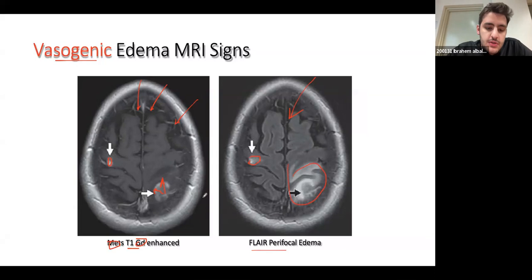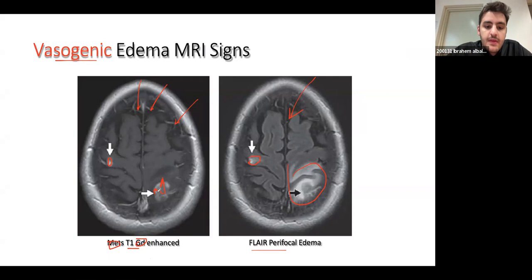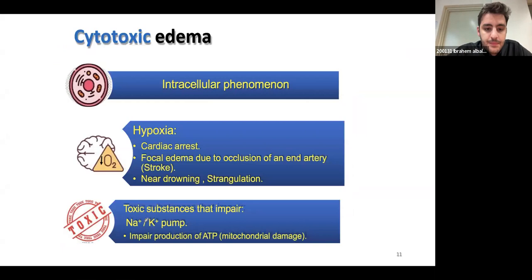One thing to notice: the leakage pattern appears on two sides of the brain. I'll explain this better when we talk about cytotoxic edema. For now, know that when Gd leaks out of vessels, it indicates the fluid is no longer in the vessels and it's probably vasogenic edema.